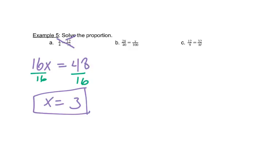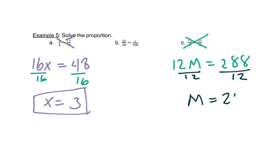Let's skip to C. Here we do 12 times m, which would give us 12m. And then 9 times 32, which would give us 288, divided by 12. So 288 divided by 12 tells me that m is 24.